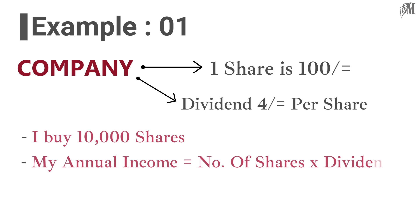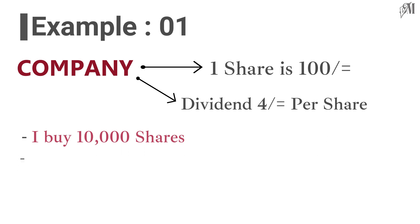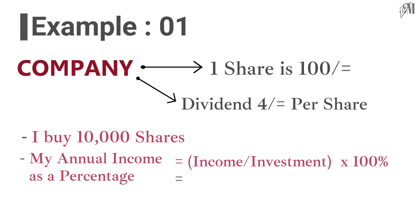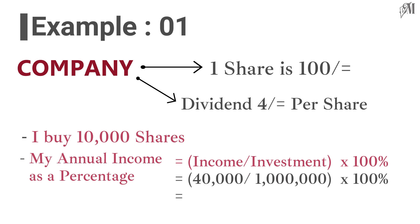My annual income can be calculated by multiplying the number of shares by the annual dividend: 10,000 × 4 = 40,000 rupees. To express this as a percentage, divide the income by the investment and multiply by 100%: 40,000 ÷ 1,000,000 × 100% = 4%.